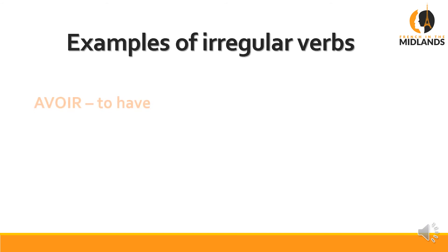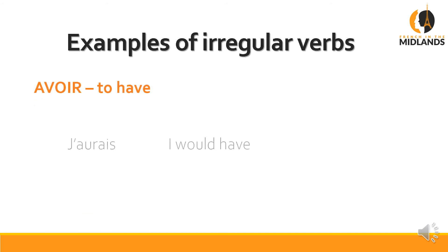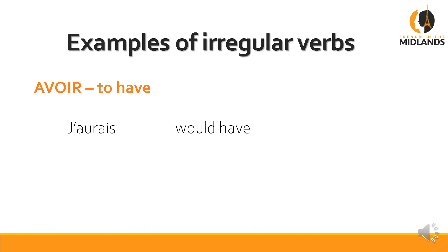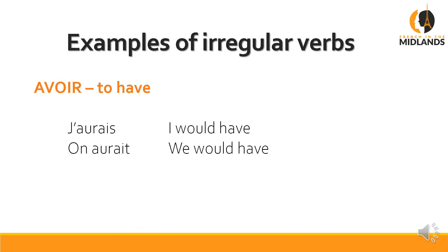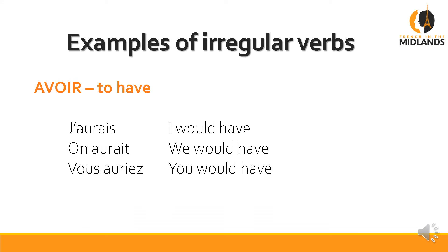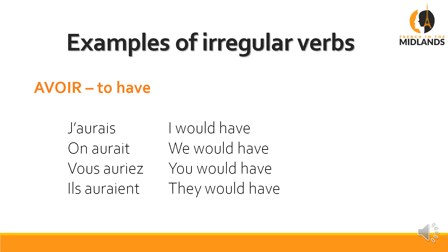The irregular ones are exactly the same as in the future tense. 'Avoir' becomes 'j'aurais' with an S — 'I would have'. 'On aurait' — 'we would have'. 'Vous auriez' — 'you would have'. 'Ils auraient' — 'they would have'.